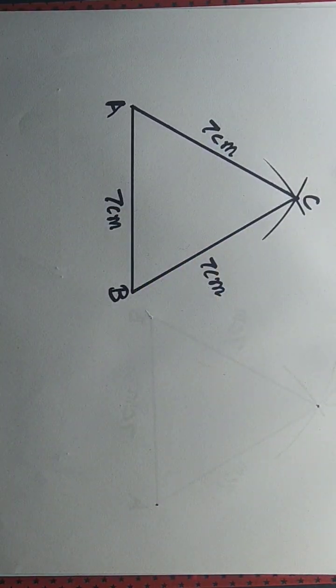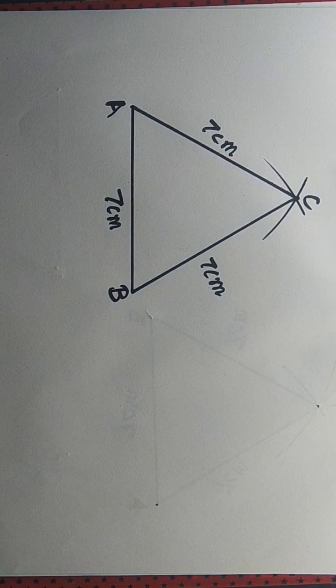So we have an equilateral triangle ABC where all the sides are equal to 7 centimeters.